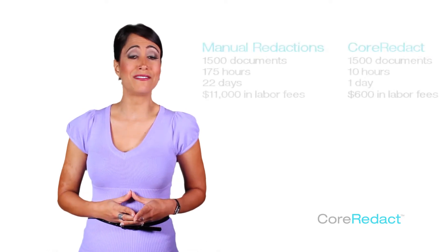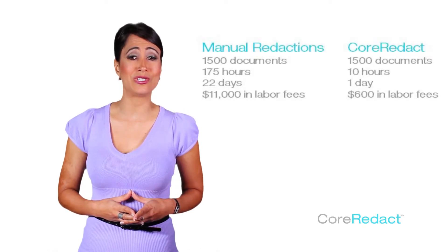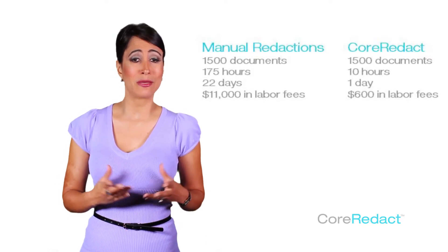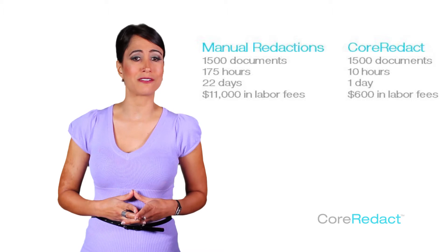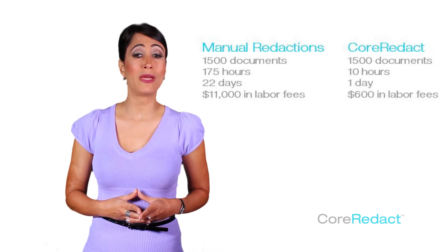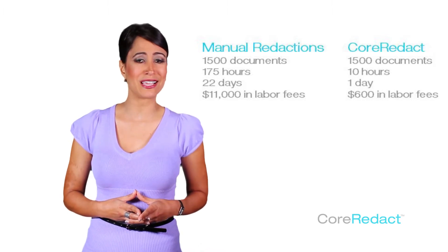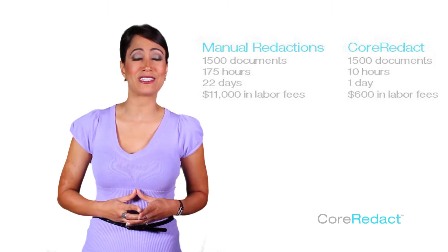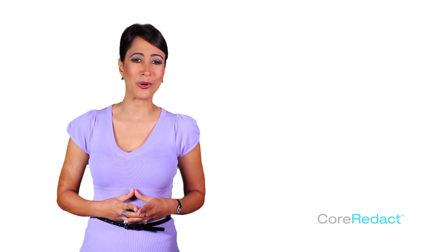Let's assume a labor cost of $60 per hour. That's a total of $11,000 to manually redact 1,500 documents, compared to just $600 in labor costs using Core Redact.